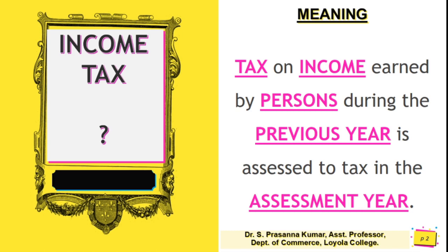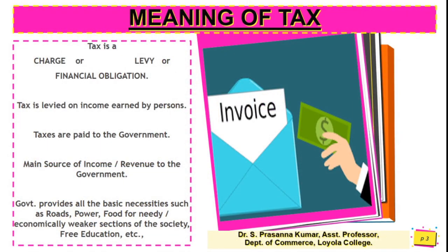There are five keywords to be understood. The first keyword is tax. Tax is a charge or levy — some people understand it as a financial burden, while very few understand it as a financial obligation. Tax is levied on the income earned by a person, and these taxes are paid to the government.